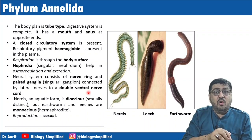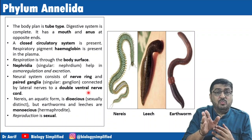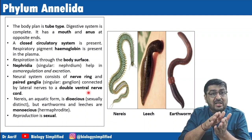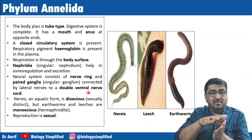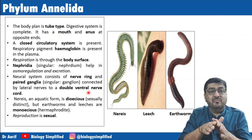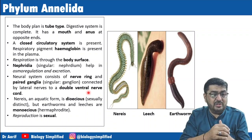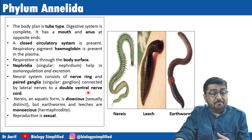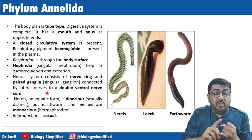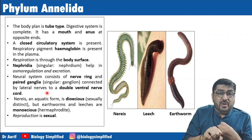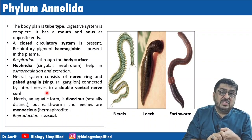When we come to Hemichordata, the last phyla, we'll find that half the nervous system is on the dorsal side and half on the ventral side — to show that this is a phylum between chordate and non-chordate. We'll mention that point when we come to Hemichordata. So we've covered the digestive system, respiratory system, excretory system, and nervous system for Annelida.